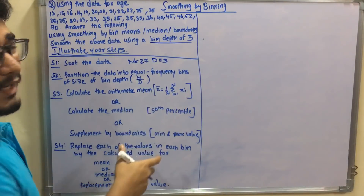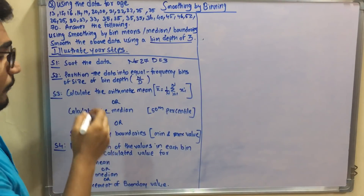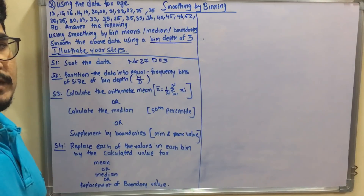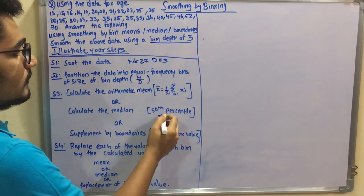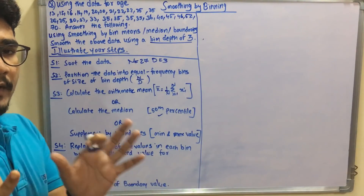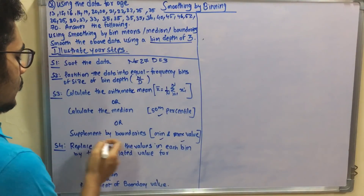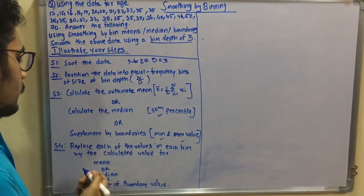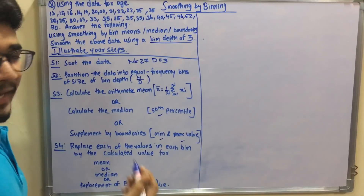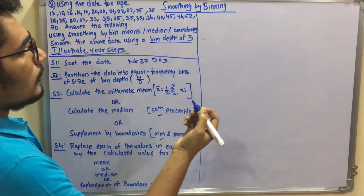Step three is to calculate the arithmetic mean for each bin using the formula x-bar equals one over n times the summation of xi. For median, you find the middle value — with three items per bin it's always the second item. For bin boundaries, each bin is represented only by its minimum and maximum values. Step four is to replace all values in each bin with the calculated value.